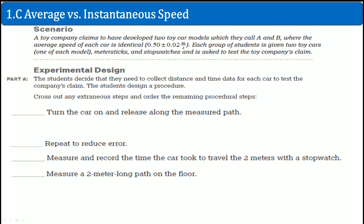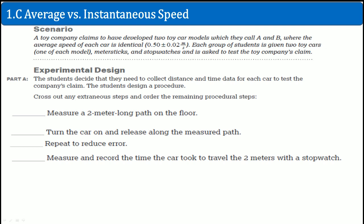So first thing that you need to do is you want to establish your distance. So that means, right, watch this. Do you see how that goes first? So the first step is to measure a two meter long path on the floor. Second step, you're going to turn the car on and release from the measured path. There's no way the second step can be the first step if you don't measure it. Then, after you measured it, you can measure and record the time the car took to travel the two meter path using the stopwatch. Then lastly, you always want to make sure you do multiple trials. So repeat the trials to reduce the error. So these are the steps. This is step one, step two, step three, and step four.